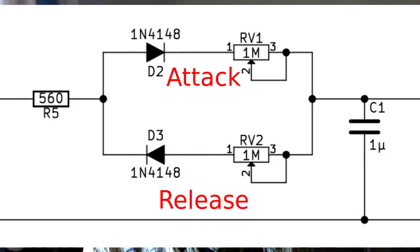On the input side, on the left hand side, you will see that there is a 560 ohm resistor. According to what's in Nathan's information, that sets the minimum time for the attack and release phases. I suppose you could play around with that if you wanted to alter that.